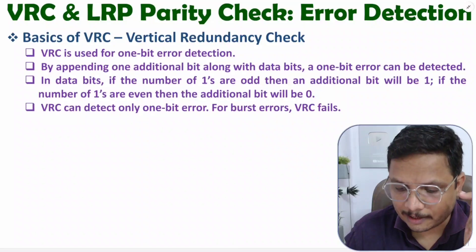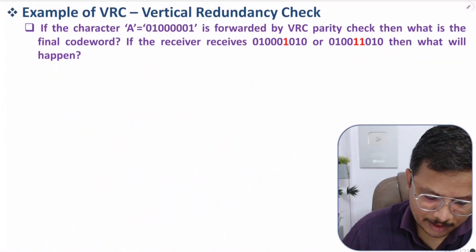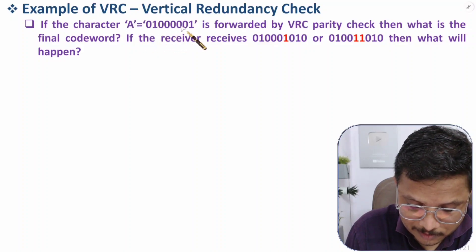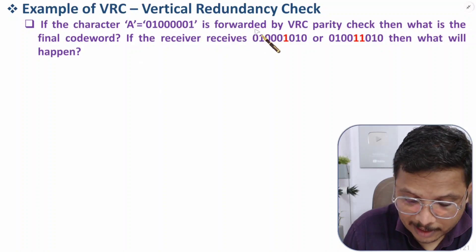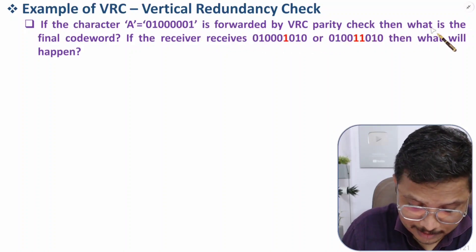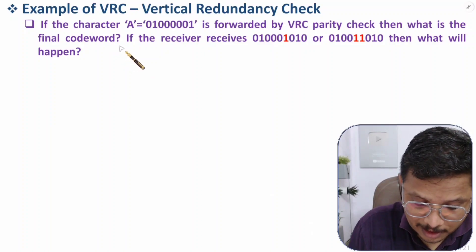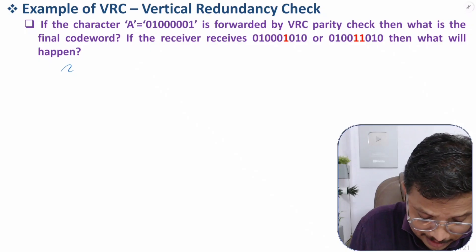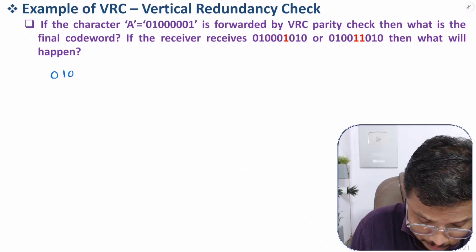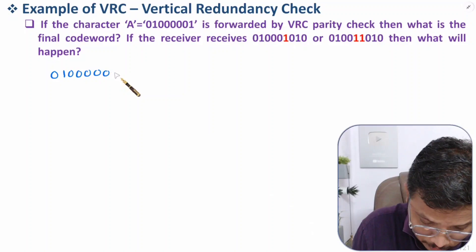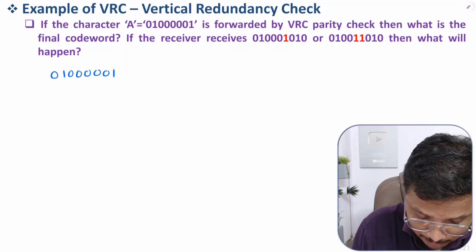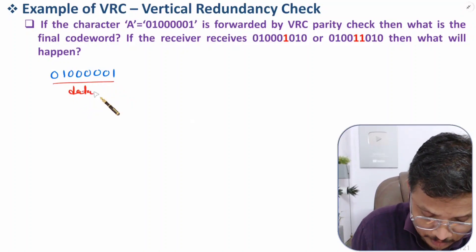Let me give you one example for more clarity. In this question, character 'A' has ASCII value 0 1 0 0 0 0 0 0 1, and we are forwarding it using VRC parity check. What is the final codeword? So here, our data bits are 0 1 0 0 0 0 0 0 1.